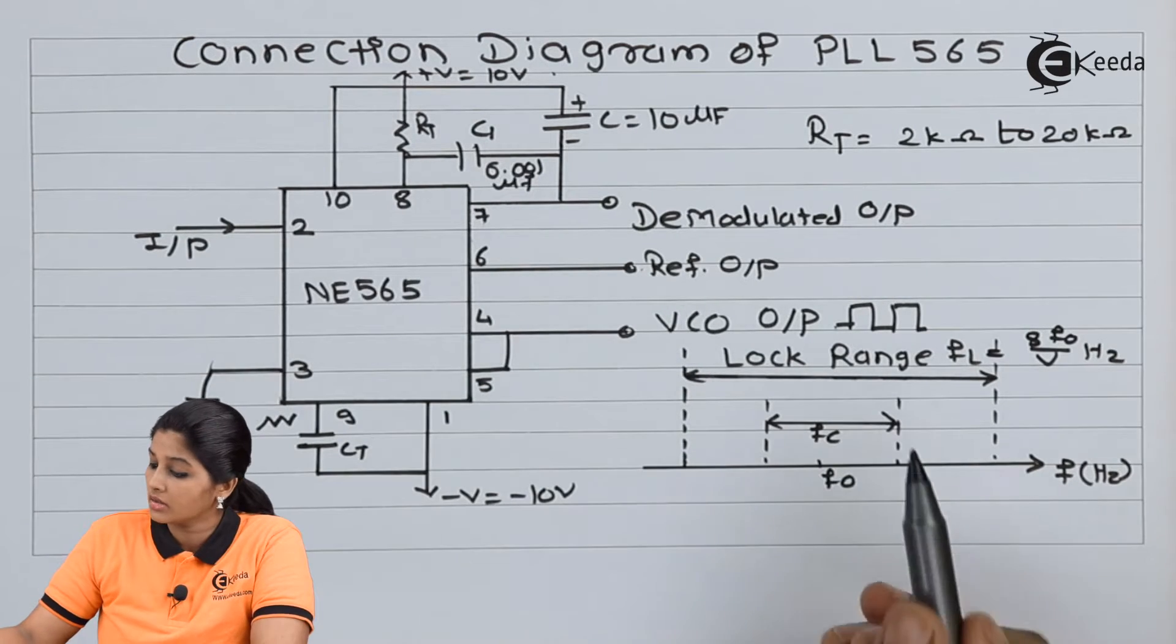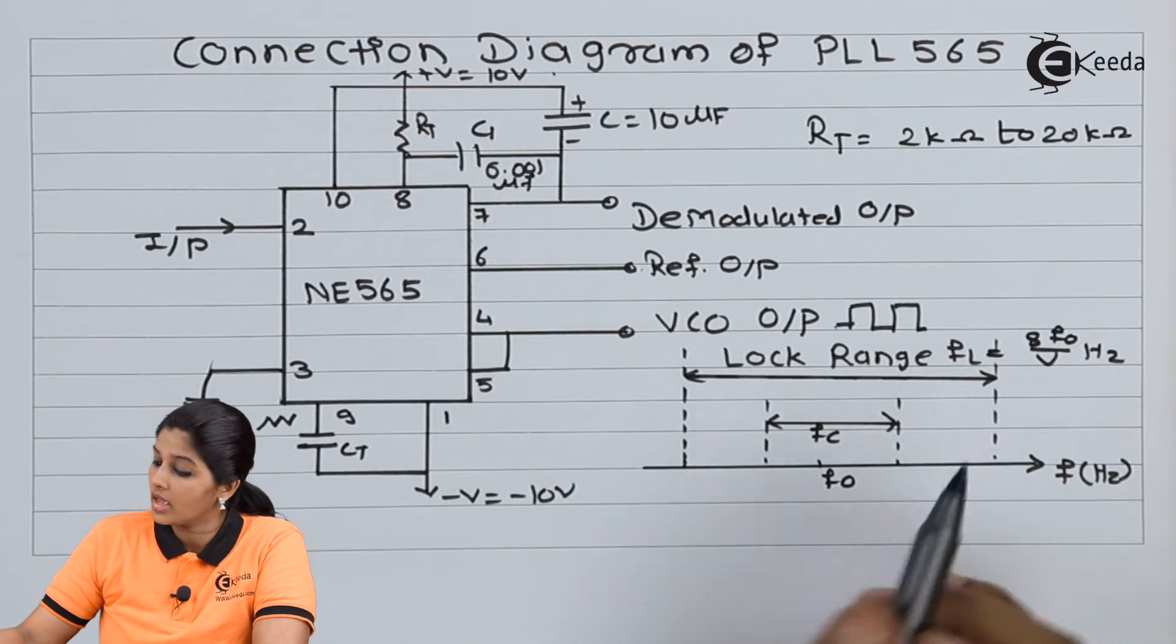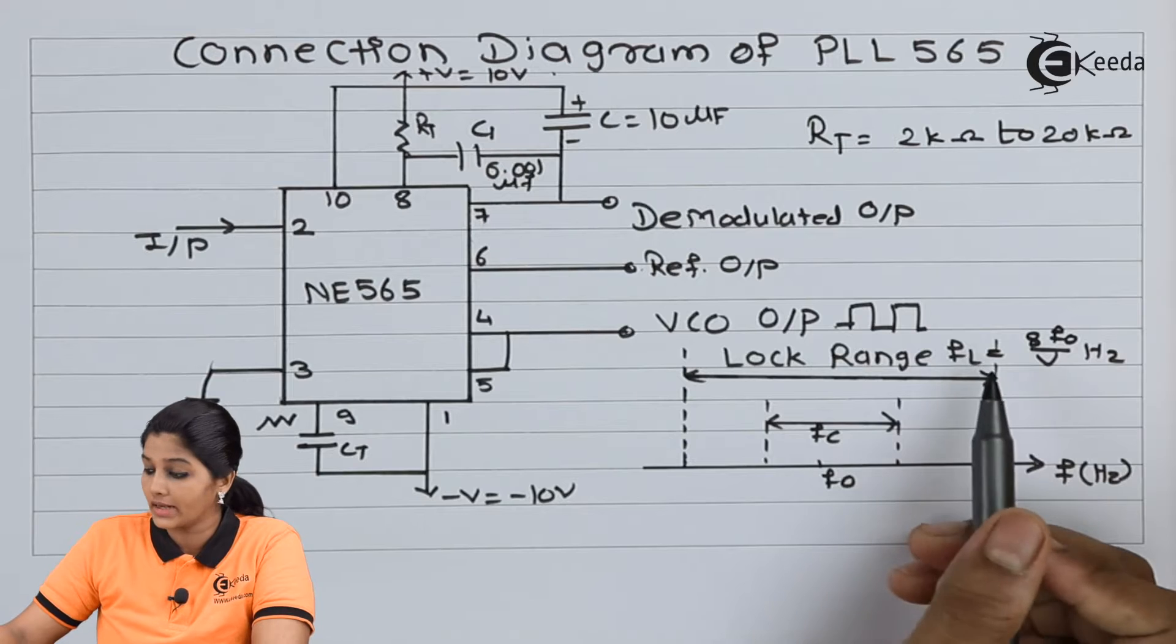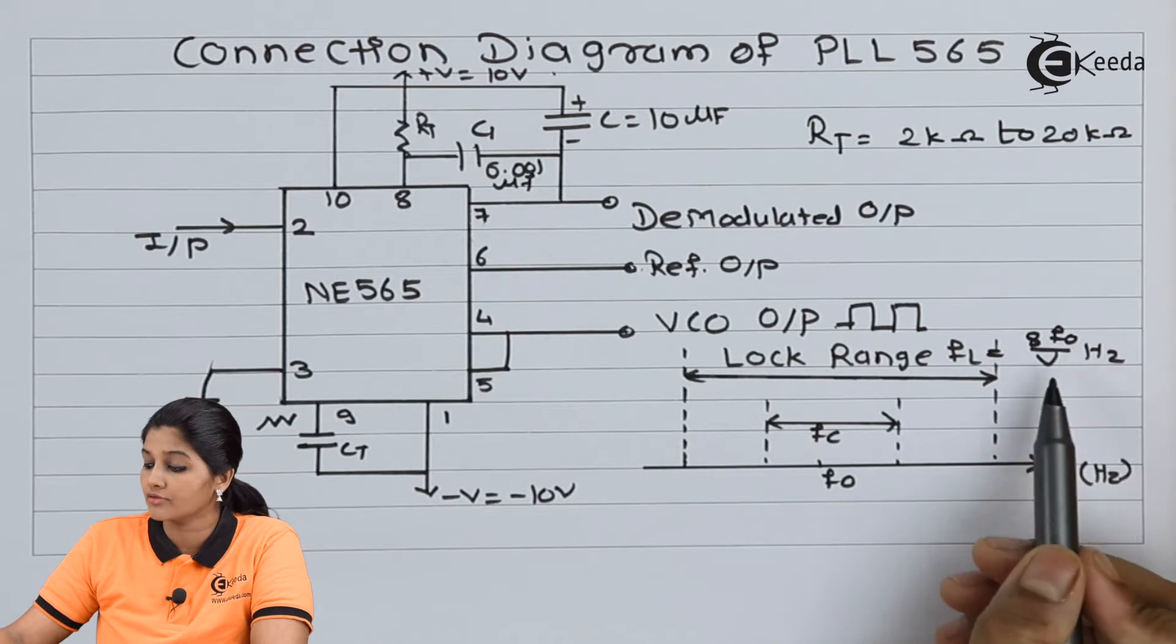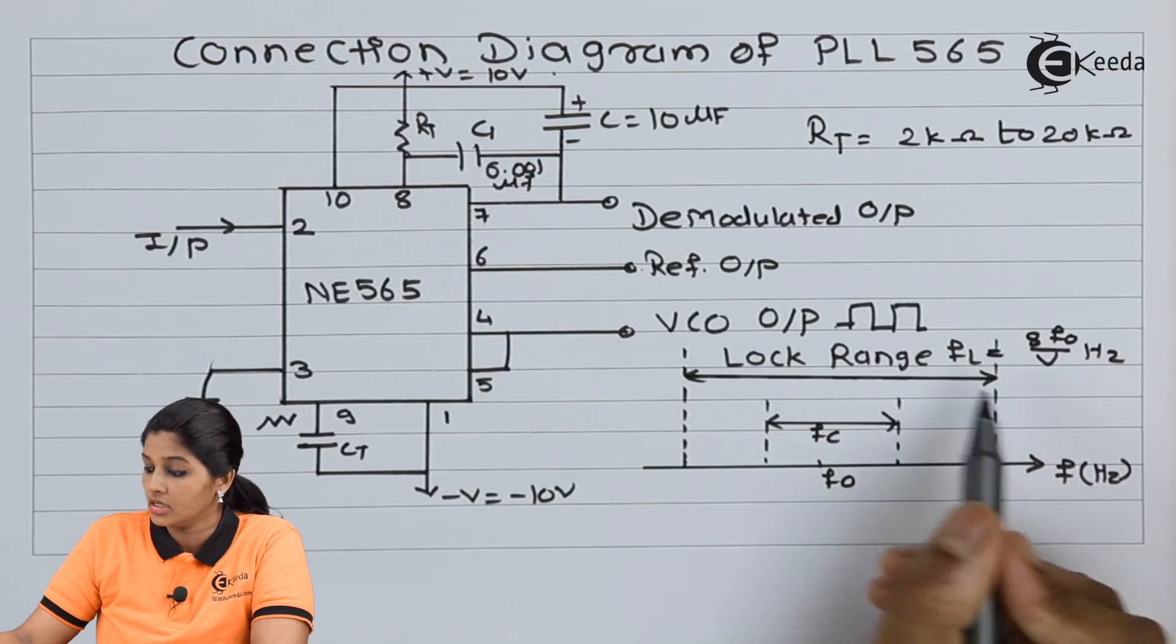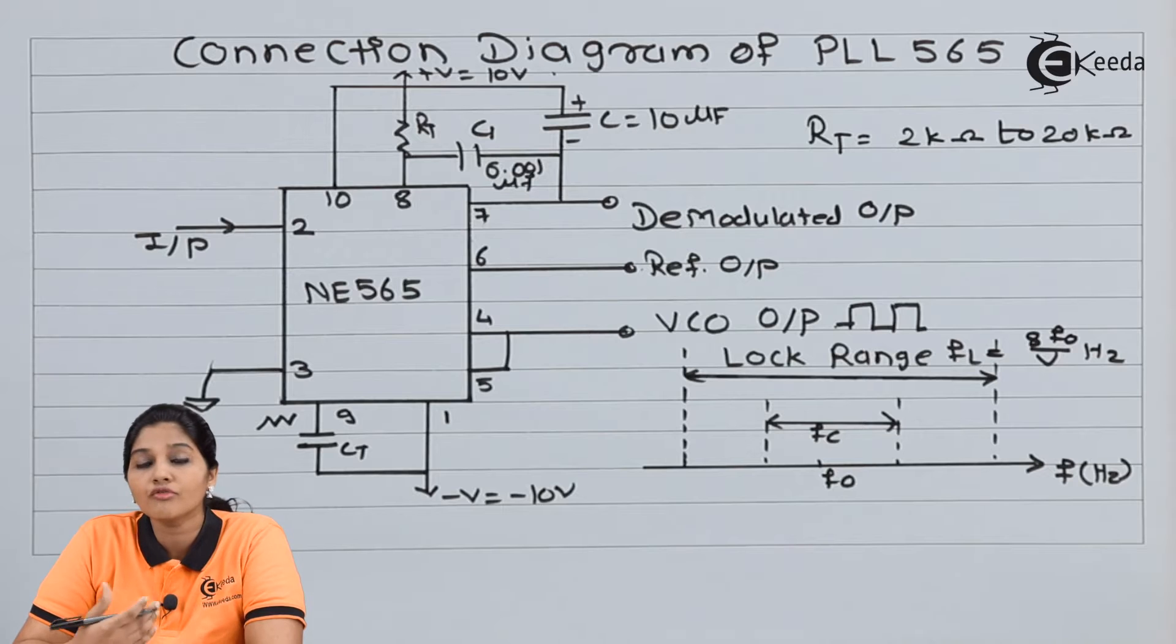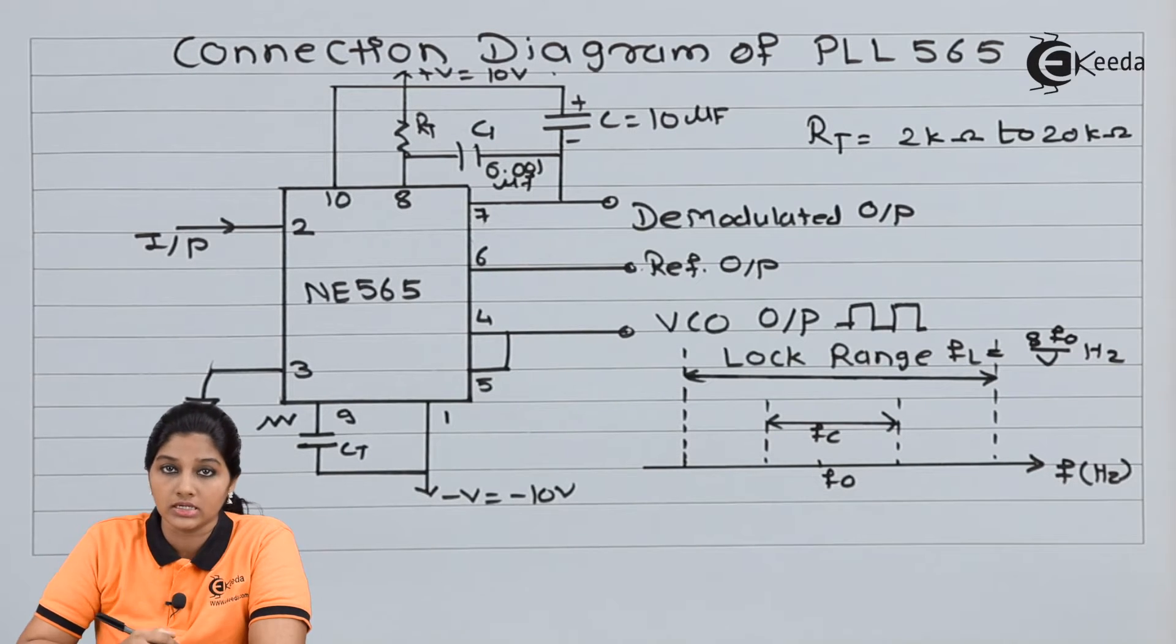Now let's have a look at the FL and FC of IC565. FL is a lock range and it is given by a formula: FL equals 8F0 upon V. So whenever there is a change in the value of V, the frequency gets changed. If the value of V is increased, the lock-in range frequency FL is decreased.